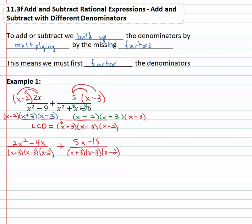Now that we have a common denominator, we're ready to combine like terms and add the numerators together. In the numerator: 2x², then negative 4x plus 5x is plus 1x, and finally minus 15, over the common denominator x plus 3, x minus 3, x minus 2.